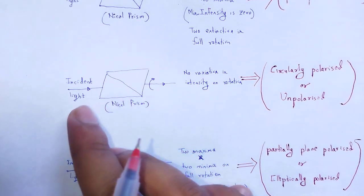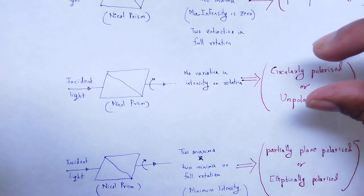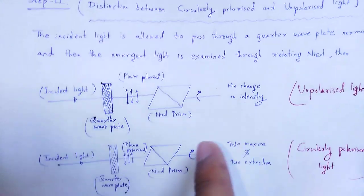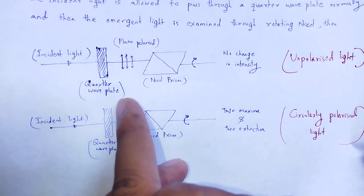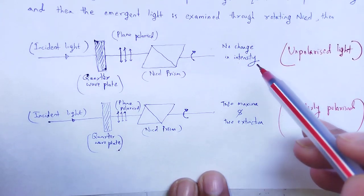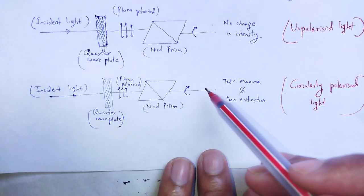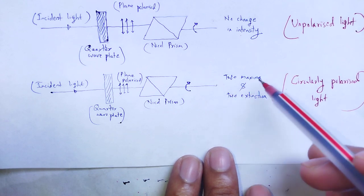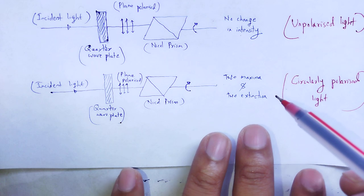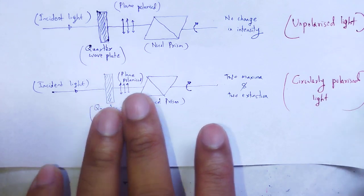We obtained the nature of the incident light as either circularly polarized or unpolarized. The distinction: when incident on the quarter wave plate and analyzed by the Nicol prism, if there is no change in intensity, it is called unpolarized. If there is a change in intensity — two maxima and two extinctions, where extinction means minimum intensity is totally zero — then the nature of that light is circularly polarized.